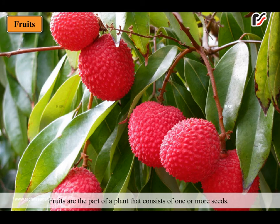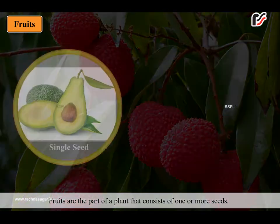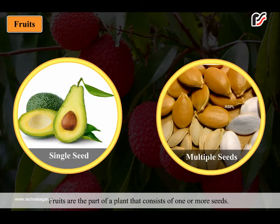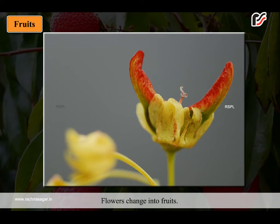Fruits are the part of a plant that consists of one or more seeds. Flowers change into fruits.